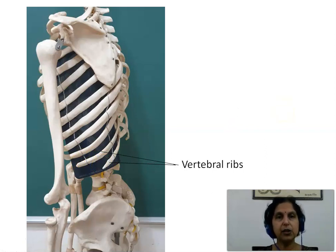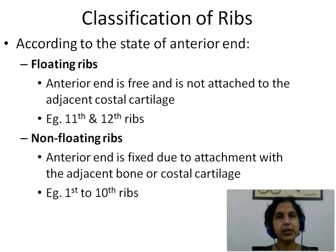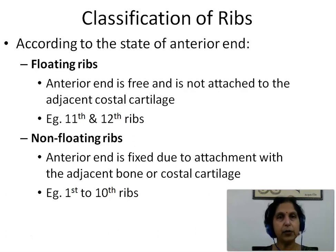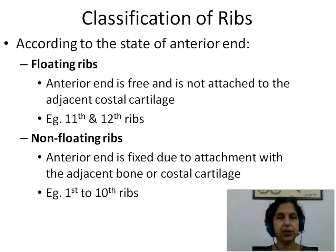So according to their articulation, we can classify the ribs into 3 types: vertebro-sternal, vertebro-chondral, and vertebral. Next, we see how we can classify ribs according to the state of the anterior end. This has two parts: floating ribs and non-floating ribs. The floating ribs are those wherein the anterior end of the rib is free and is not attached to the adjacent costal cartilage — examples being the 11th and 12th ribs, the same as the vertebral ribs. Non-floating ribs are those wherein the anterior end is fixed due to attachment with the adjacent bone or costal cartilage — examples being the 1st to 10th ribs, which include the vertebro-sternal and vertebro-chondral ribs.